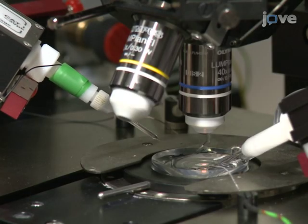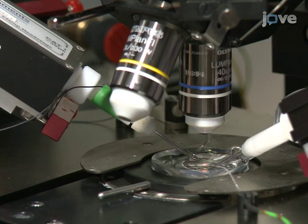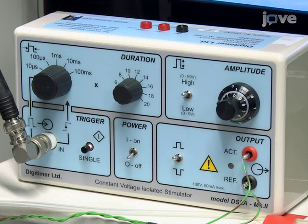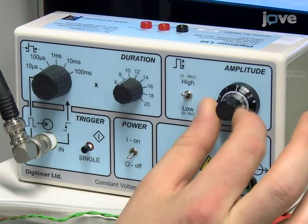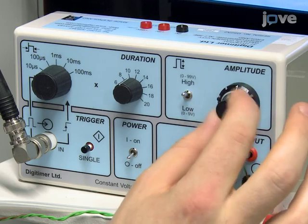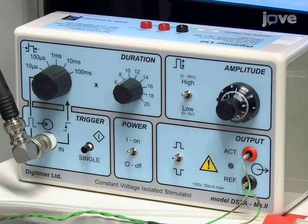To observe synaptically evoked responses, position an extracellular stimulation electrode in the slice at the border of the stratum radiatum and stratum lacunosa moleculari. Recording in voltage clamp mode, use an isolated constant voltage stimulator to deliver either single or 200 Hz trains of five 50-volt electrical stimuli to the presynaptic axons every 20 seconds.